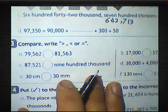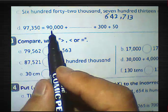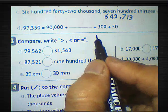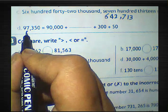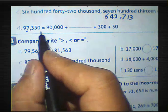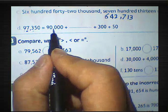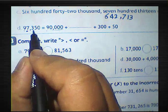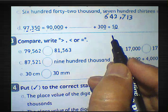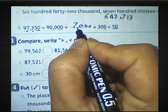Part D: 97,350 equals 90,000 plus blank plus blank plus blank. We want to write this number in expanded form. We have 90,000 already written. Then we fill in 7,000, 300, and 50. So the expanded form is 90,000 plus 7,000 plus 300 plus 50.